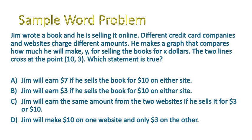In other questions, like a common core type of question, you might be given a word problem with no graph. Jim wrote a book and he's selling it online. Two different credit card companies and websites charge different amounts. He's making a graph that compares how much he will make (Y) for selling the books for X dollars. The two lines cross at the point (10, 3) — which statement is true? This is a description of a graph of two lines that cross. You're comparing two websites and saying if I sell the book for X dollars — $10 — I am making Y dollars — $3.